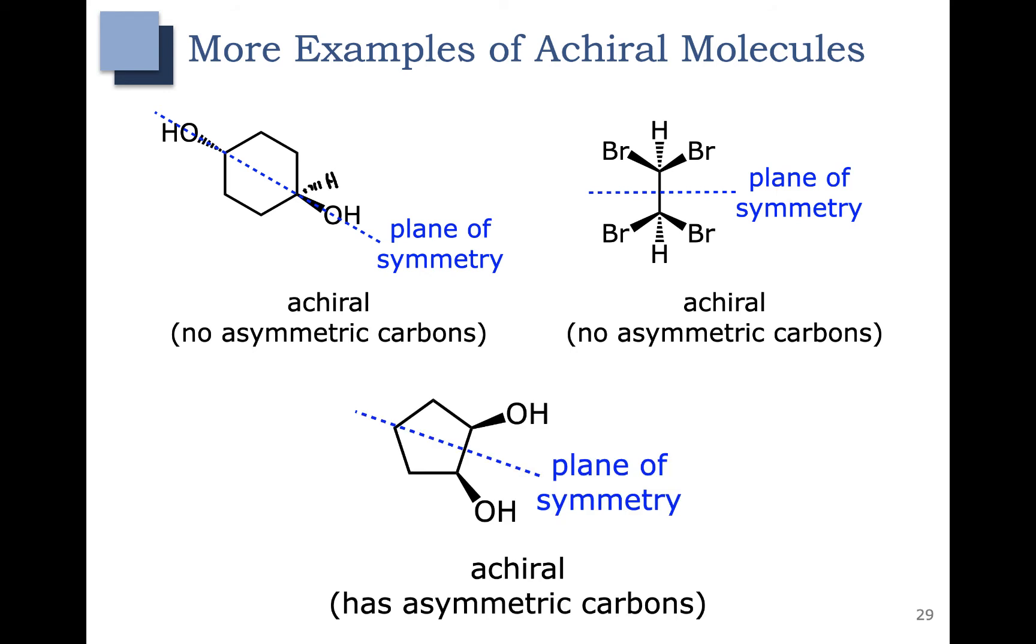How about this one down here? This one's kind of weird. If we add in the hydrogens, you can see that it does happen to have asymmetric carbons. This carbon is asymmetric because it has an oxygen and a hydrogen, a CH and a CH2, so it has four different groups attached. This carbon over here is also asymmetric. It has a hydrogen, an oxygen, a CH and a CH2, so it also has four different groups attached.